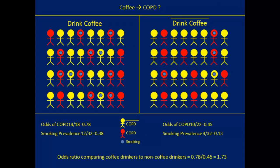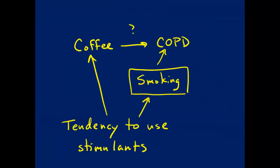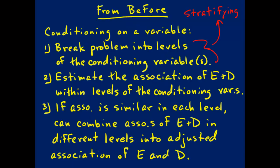Let's think back to our example of conditioning on a variable. We were looking at the association between coffee drinking and COPD, and we had an idea that our analysis would be confounded by smoking. Within our DAG, there was a backdoor path between COPD and coffee that passed through smoking and the tendency to use stimulants. We decided to condition on smoking in order to block this backdoor path and take out the confounding in the association between coffee and COPD. The first part of this process — breaking the problem into levels of the conditioning variables, which we now know is called stratifying — meant that we stratified by smoking.